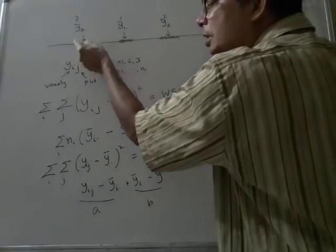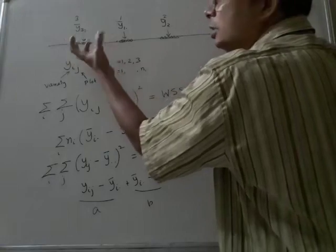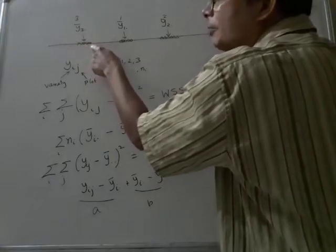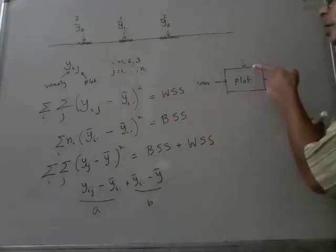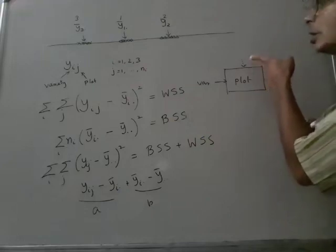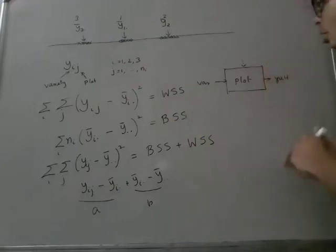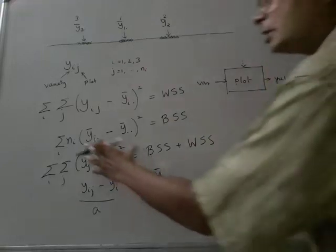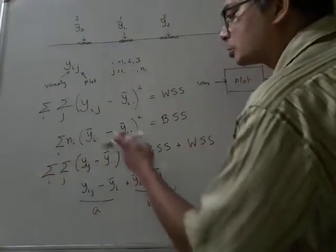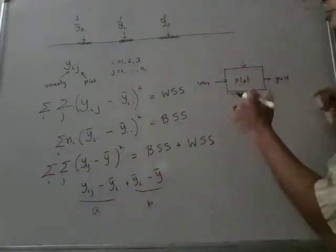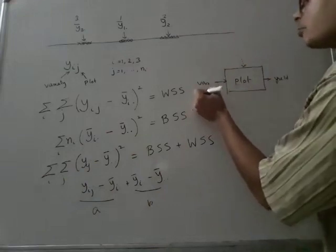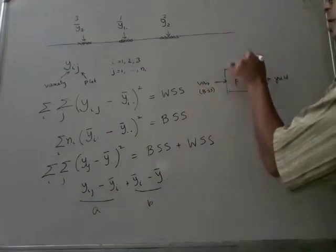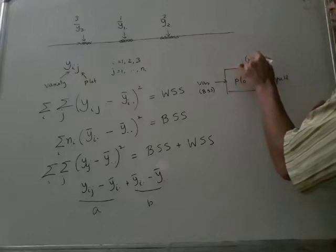So these differences within each cluster, within each class, that definitely comes because of the random input. So I can as if say this is the total sum of squares and that is split up into two parts. Part for variety and the remaining part for this.